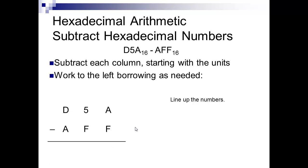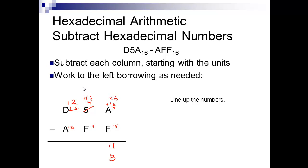Let's look at one where you have to borrow. I like to convert all letters first — that's a 10, that's a 15, that's a 15, that's a 10. It's easier to deal with the numbers. We've got 10 minus 15 — we can't do that, so we borrow. This becomes a 4, and we add 16 to the 10, giving us 26. 26 minus 15 is 11. Don't leave it as 11 — convert it: 11 in hexadecimal is B.